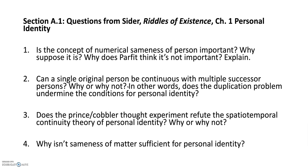Let's go to the first section, section A1. These are questions from Sider's chapter 1, Personal Identity and Riddles of Existence. The first question is: Is the concept of numerical sameness of person important? Why suppose that it is? Why does Parfit think it's not important? Parfit is a philosopher that Sider refers to in the chapter. Here you're being asked to explain your answer in a brief paragraph. You don't need to quote a lot — maybe one quotation, one indirect paraphrase, or just a page reference so I can see where you are in the text. There are three other questions in this section. You don't have to answer them all, and this is one of the sections you could skip.